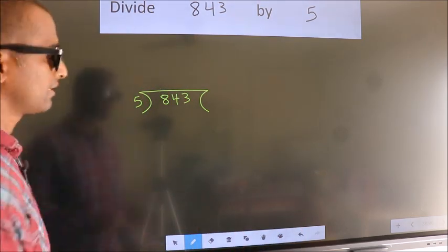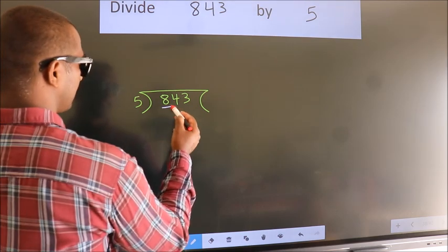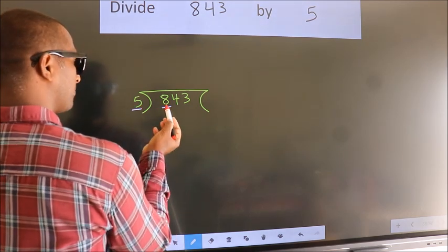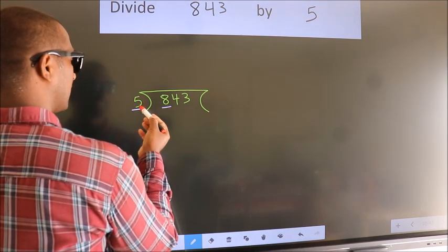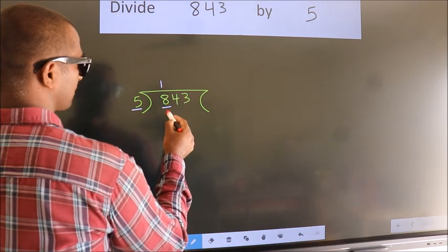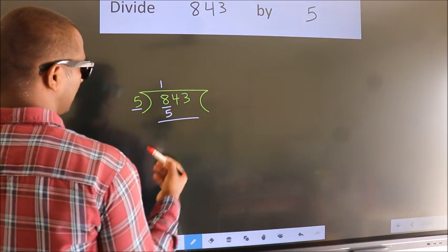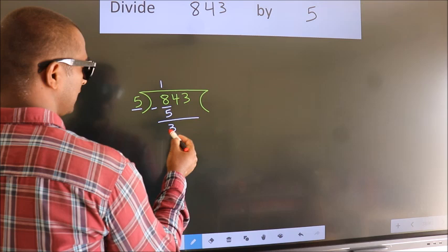Next. Here we have 8, here 5. A number close to 8 in the 5 table is 5×1=5. Now, we should subtract. We get 3.